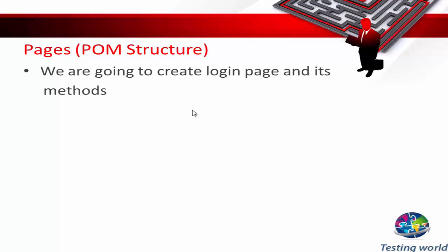Then all the activities that you are going to perform on each page — like on the login page my activities will be: enter username, enter password, click on the sign in button, click on forget password. We have a lot of activities. Now we need to create one method for each activity. Like for the login page, one method for enter username, one method for enter password. So in POM structure we have a class for each page and a method for each activity.